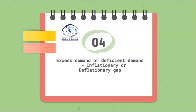Fourth and the most expected topic is excess demand, which is shown as inflationary gap. This has to be there in the paper because it has been repeated many times in boards. So excess demand or deficit demand with the help of a diagram — and they can give you the diagram and ask you to identify the inflationary gap or deflationary gap.